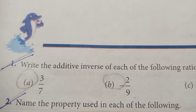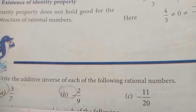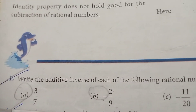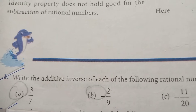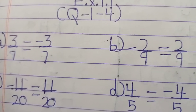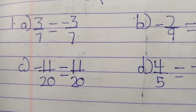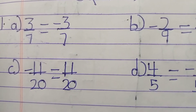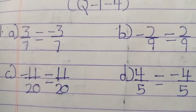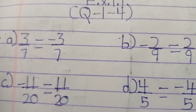The first question is to write the additive inverse of each of the following rational numbers. So: (a) 3/7 → additive inverse is -3/7; (b) -2/9 → additive inverse is 2/9; (c) -11/20 → additive inverse is 11/20; (d) -4/5 → additive inverse is 4/5. In additive inverse, we do a sign change — if it is minus it becomes plus, and vice versa.